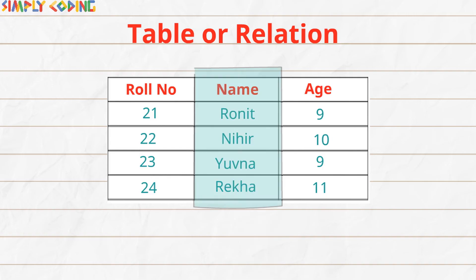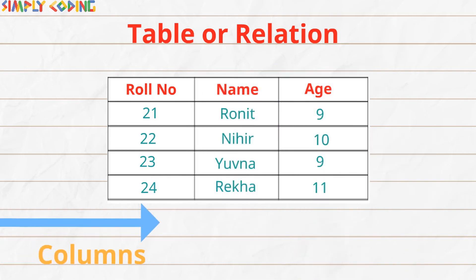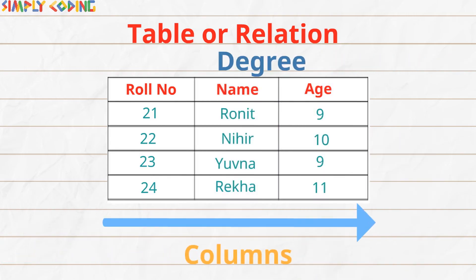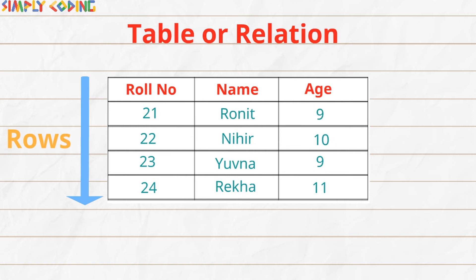Columns are also called fields or attributes, which contain one type of information. The number of columns or attributes is called the degree of the relation. For example, the degree of this table is 3. Similarly, the number of rows or tuples in a table is called the cardinality of the relation. In this example, the cardinality is 4.